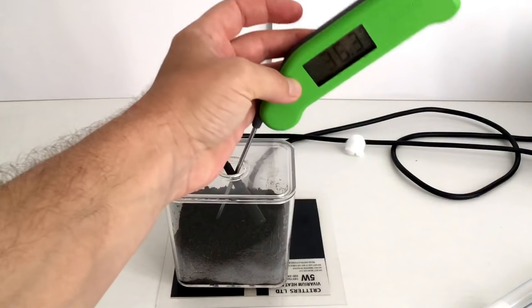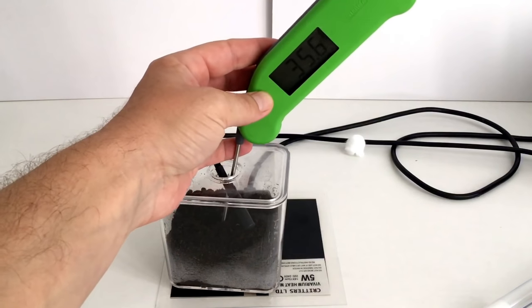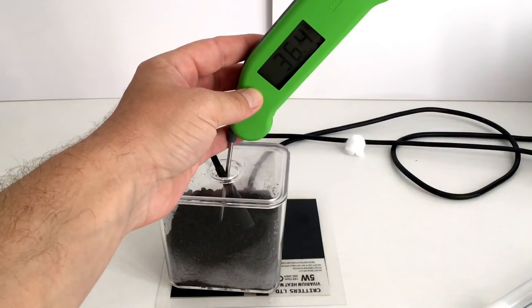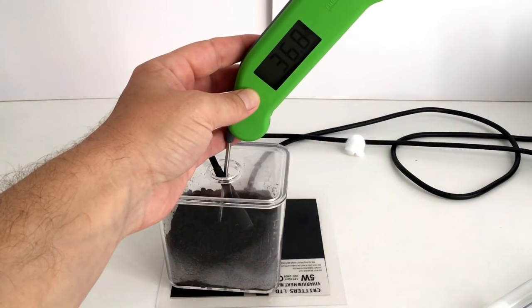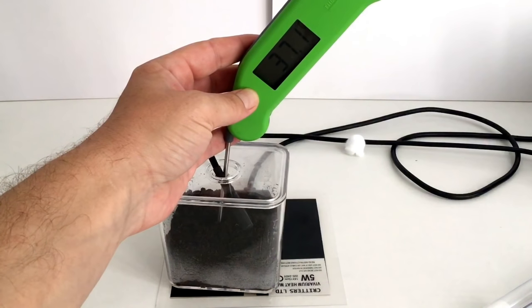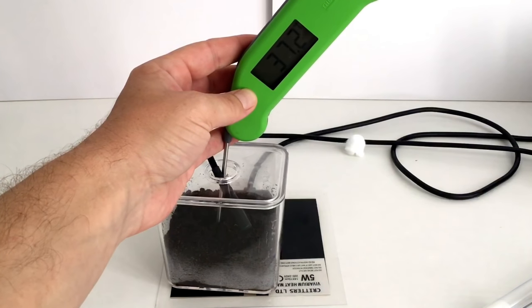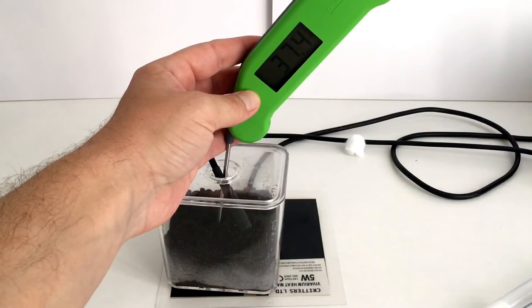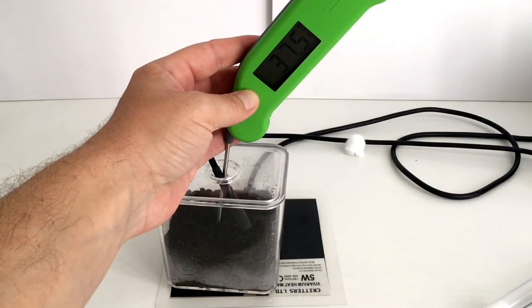And now it's set to be at 28. But because we haven't put the probe in correctly, it just shows you that that heat or the power is still being applied to that heat mat. Because the probe isn't in the correct place it needs to be, which is at the bottom of that soil, in contact with the floor of that outworld.